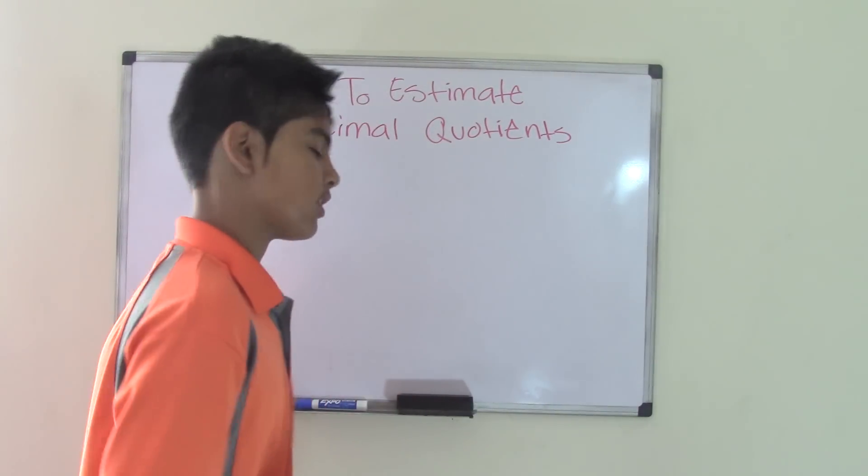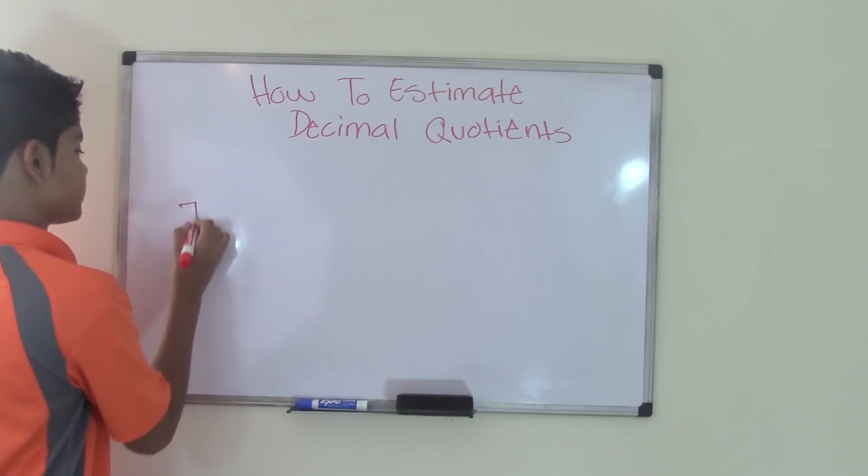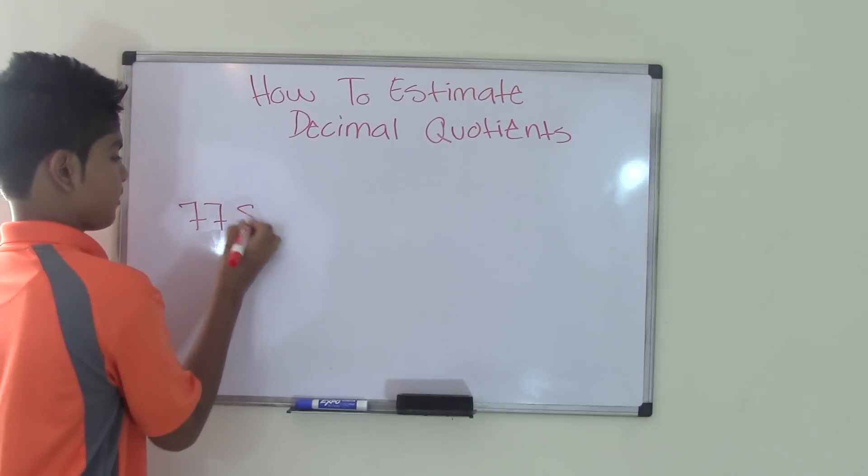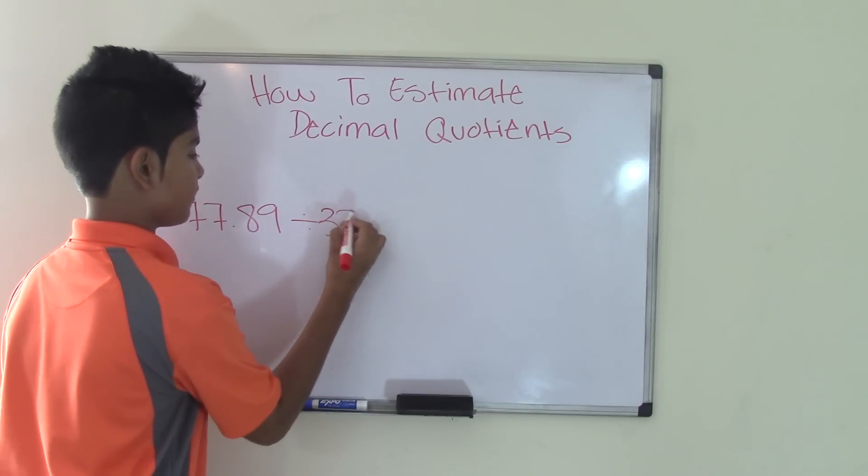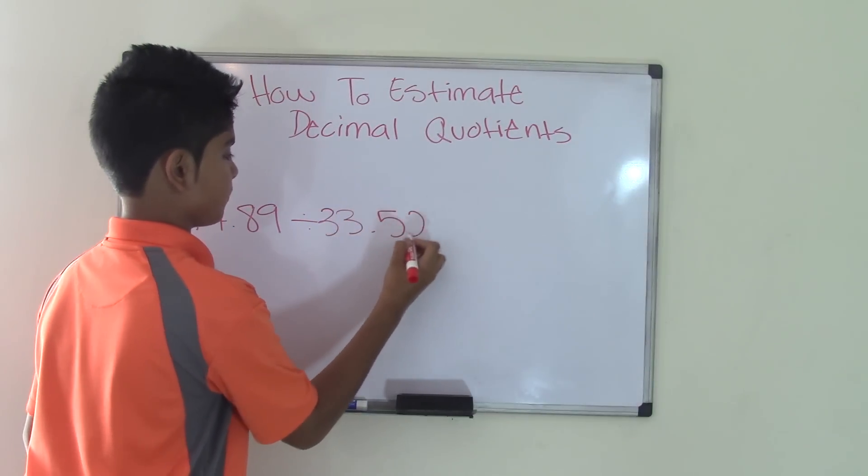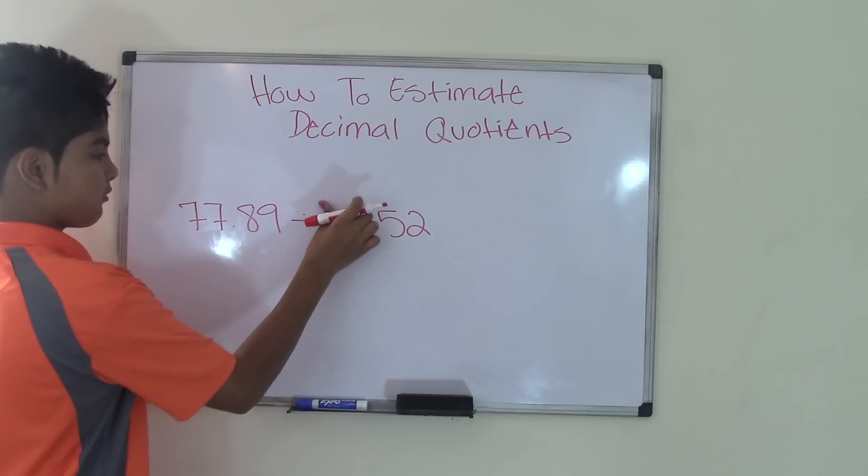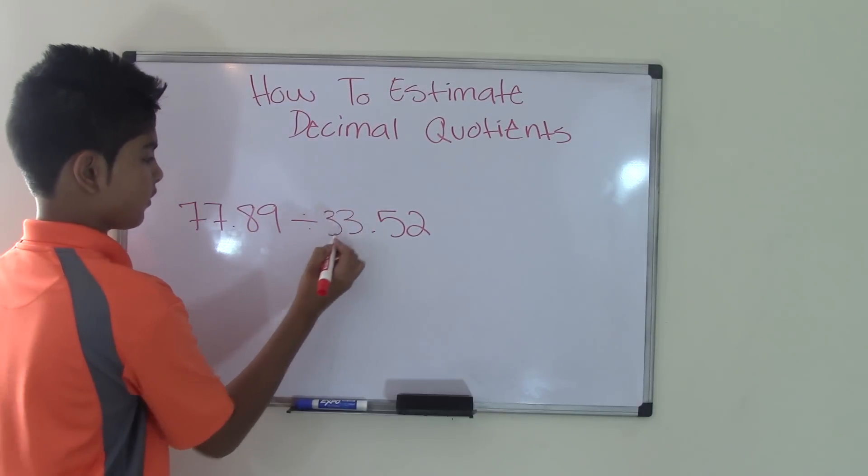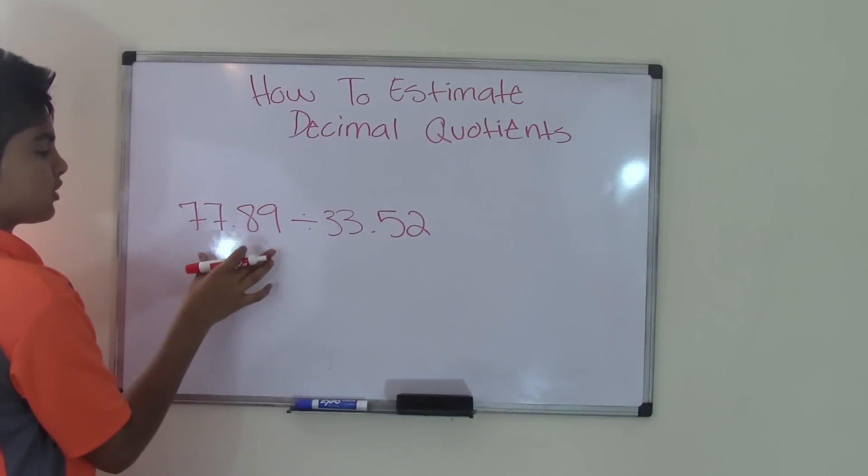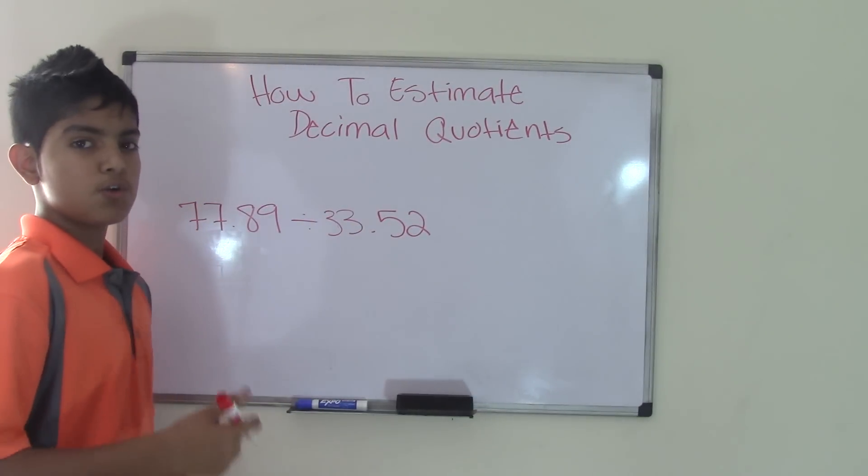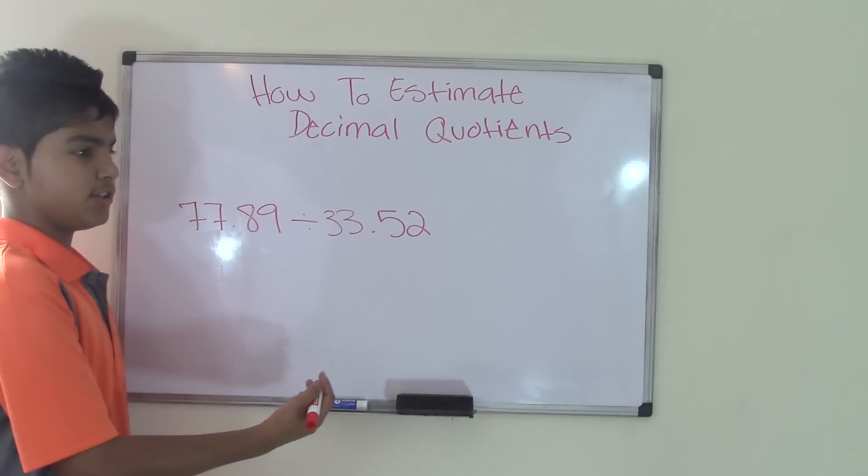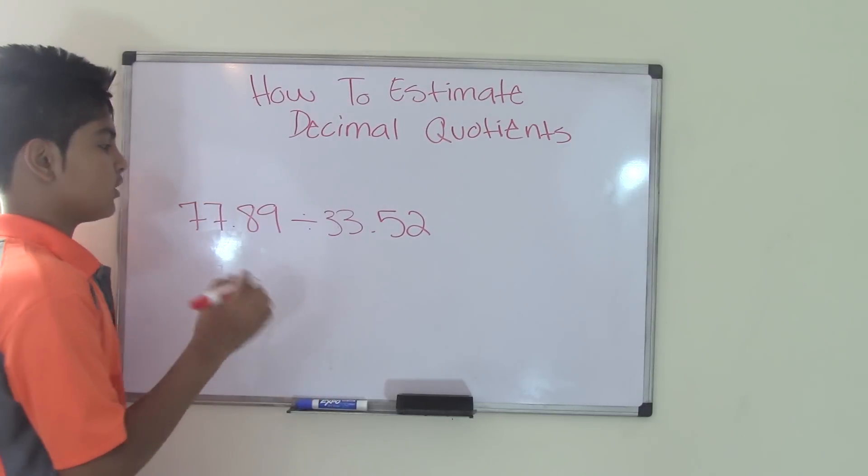All you're doing in this topic is making it easier for yourself to divide decimal numbers. So, for example, let's take a problem: 77.89 divided by 33.52. Now, this is pretty complicated, especially to fifth graders who have not seen it ever in your classes.